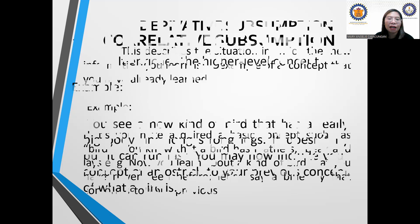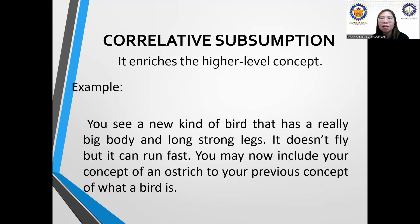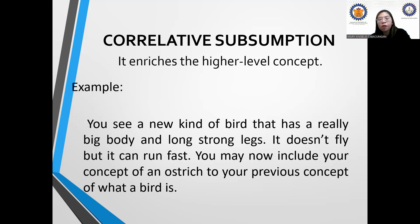Next, correlative subsumption — it enriches the higher-level concept. For example, you see a new kind of bird that has a really big body and long, strong legs. It doesn't fly, but it can run fast. It is still in the category of bird, but your previous idea of birds was that they fly. In correlative subsumption, there is an exception — not all birds fly. Your knowledge about birds becomes broader. Not all birds have wings.